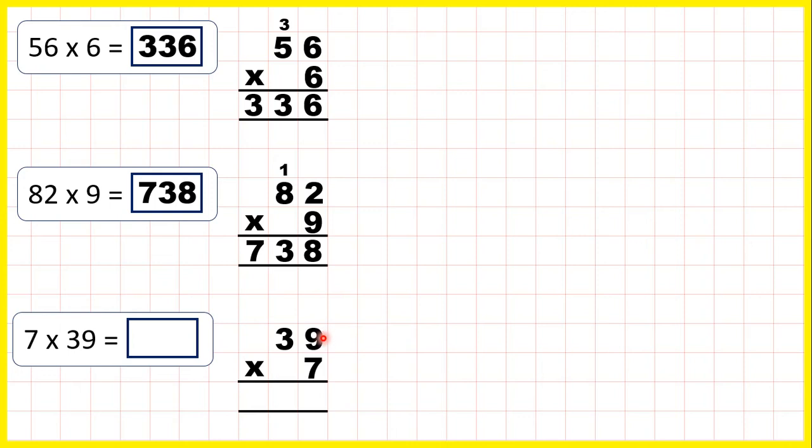So 9 times 7 is 63, so 6, 3, and 3 times 7 is 21, and 21 plus 6 is 27, so our answer is 273.